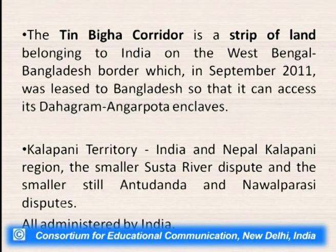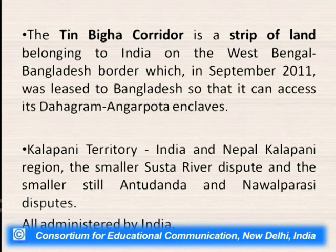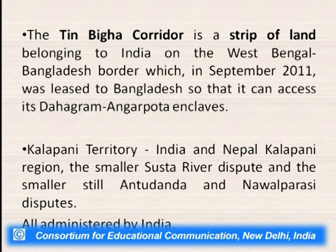India also has some boundary disputes with other countries. The Teenbiga Corridor is a strip of land given to West Bengal in 2011 on lease so that Bangladesh can access its Dahagram and Angarporota enclave — an enclave of India leased to Bangladesh. There is also India's Kalapani territory and Nepal's Kalapani region, which is also a disputed region, along with smaller disputes like the Sustha River dispute and the Silguti-Antunanda and Nawalparsai disputes.